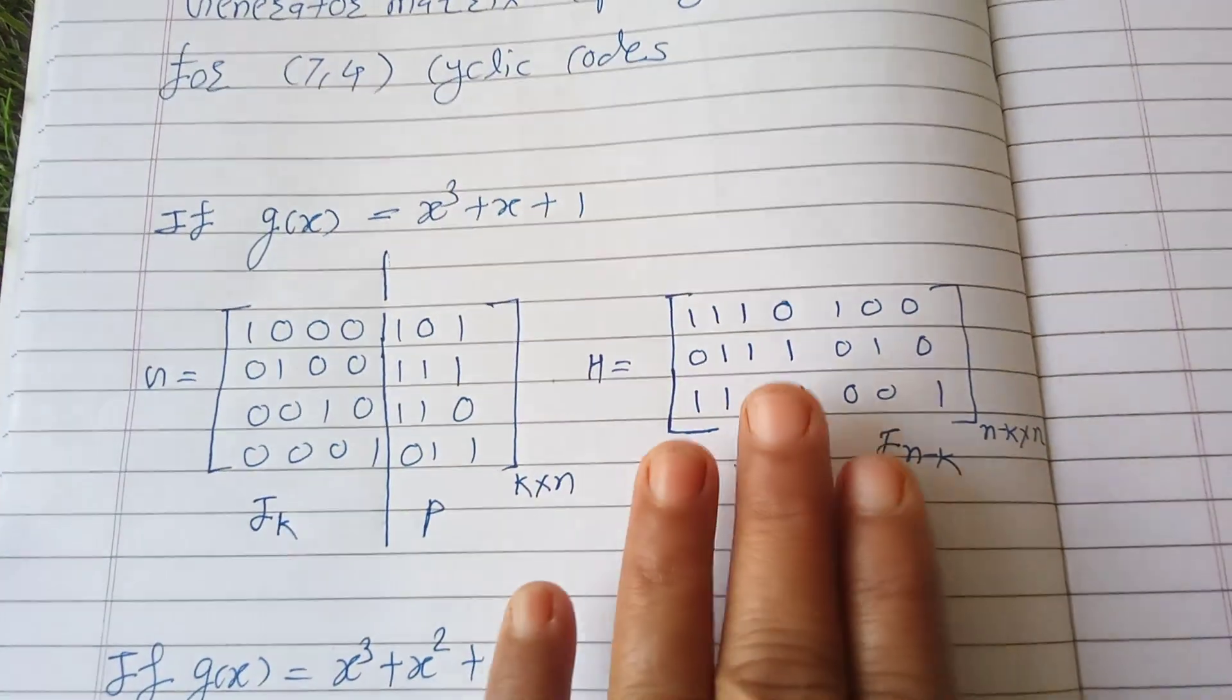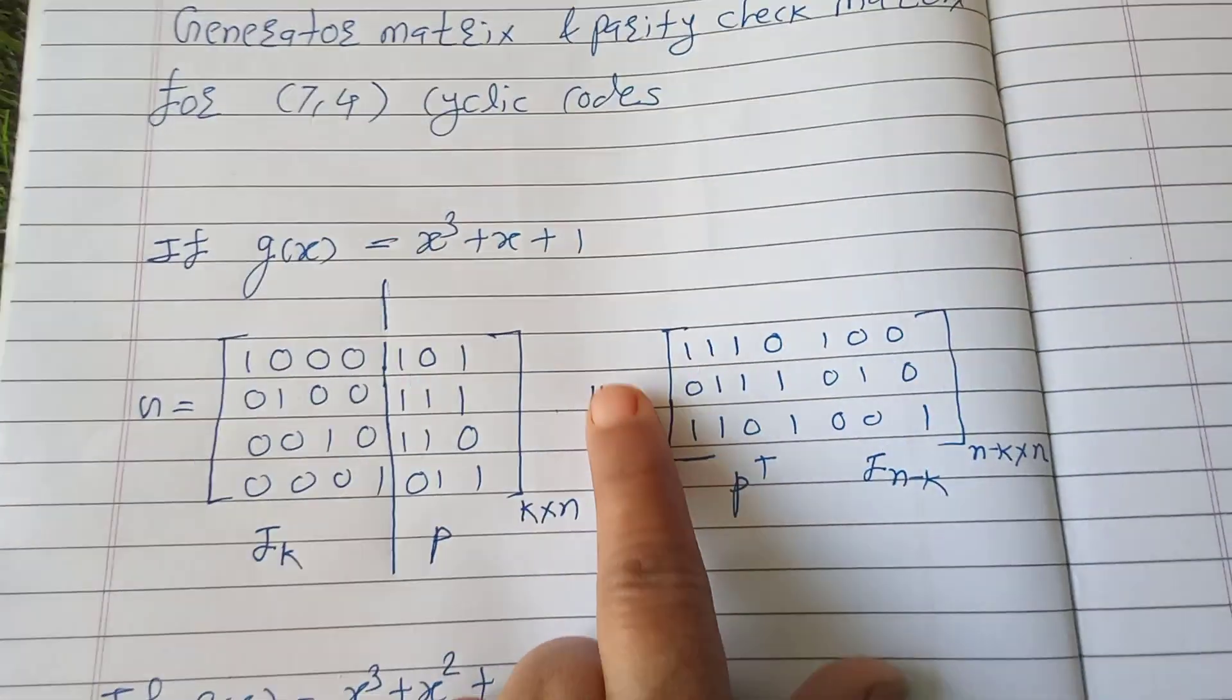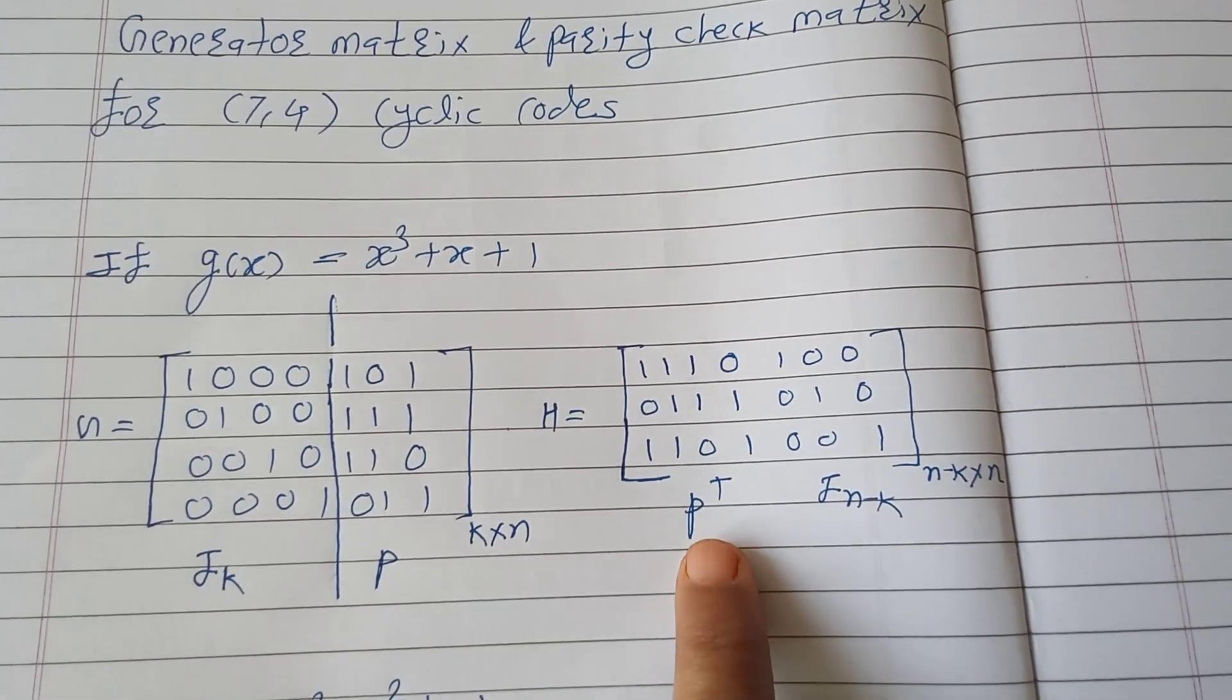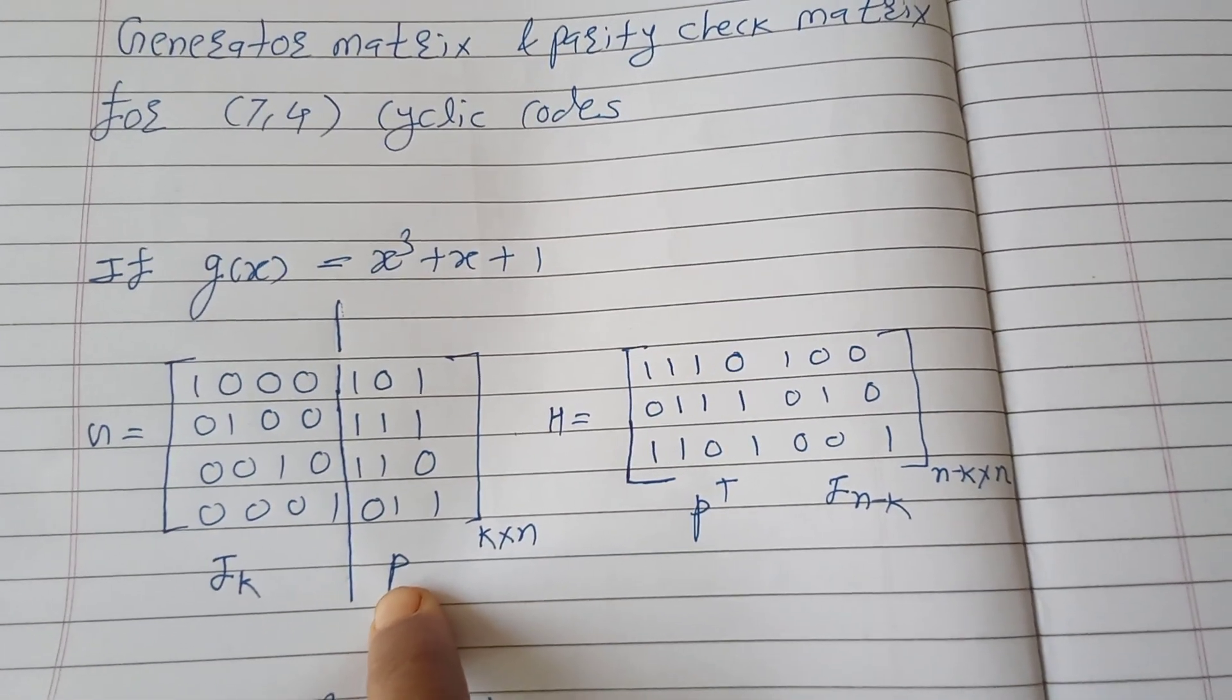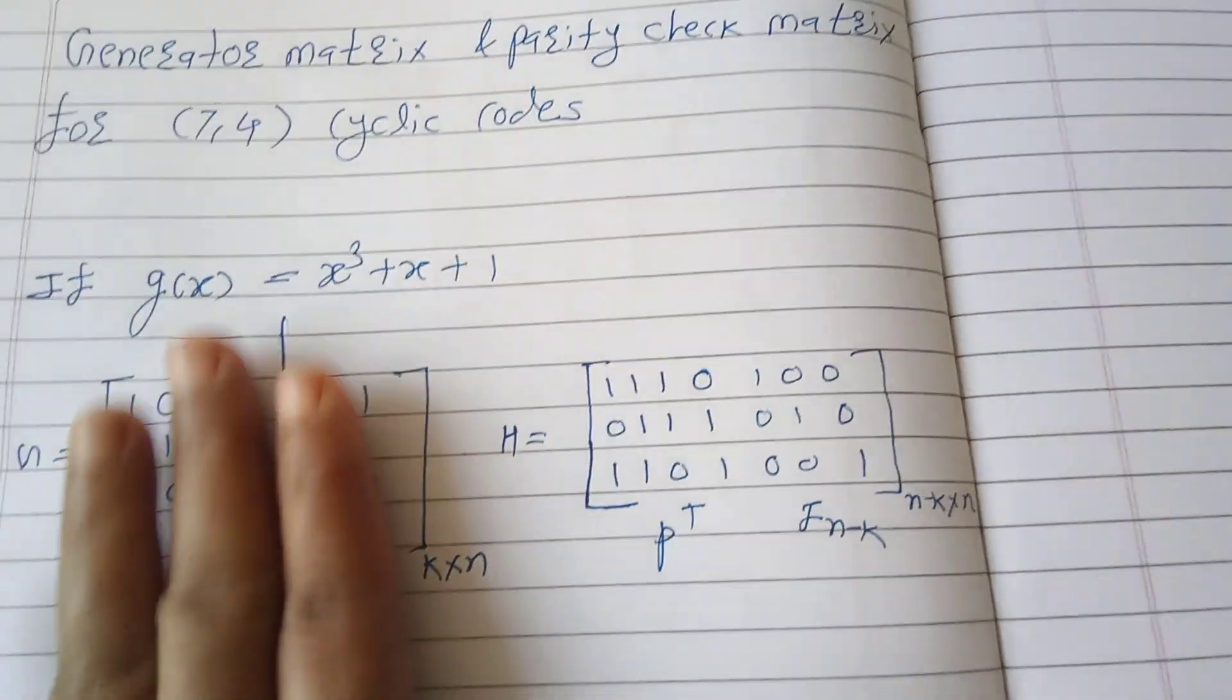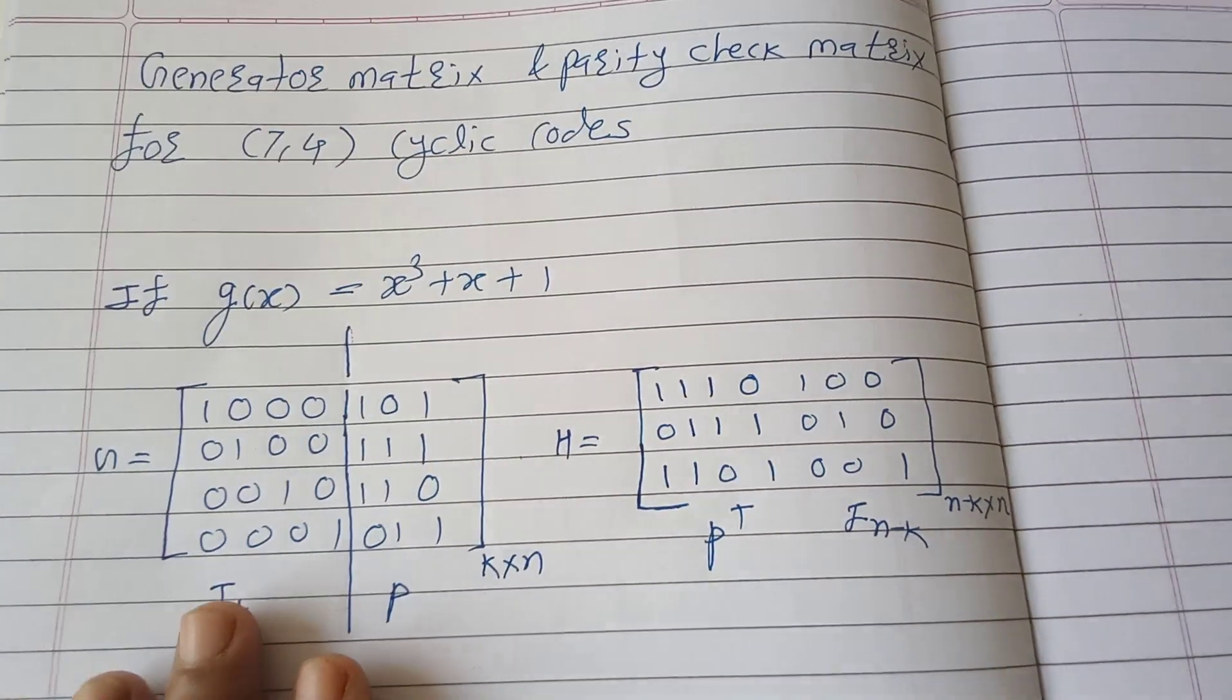Next, how to from this generator matrix obtain the parity check matrix H? The first term, first block or first bits will be of P transpose. That means you have to do the transpose of this block. So triple one, don't consider it as separate, only to distinguish between I_k and P.